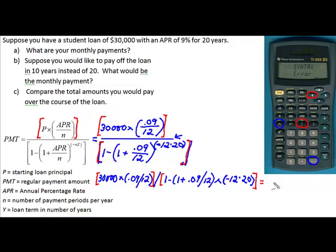If you have done this correctly, you should see that the monthly payment is going to be $269.92. Up here in our problem, I'm going to enter that amount so that we can keep track of it.